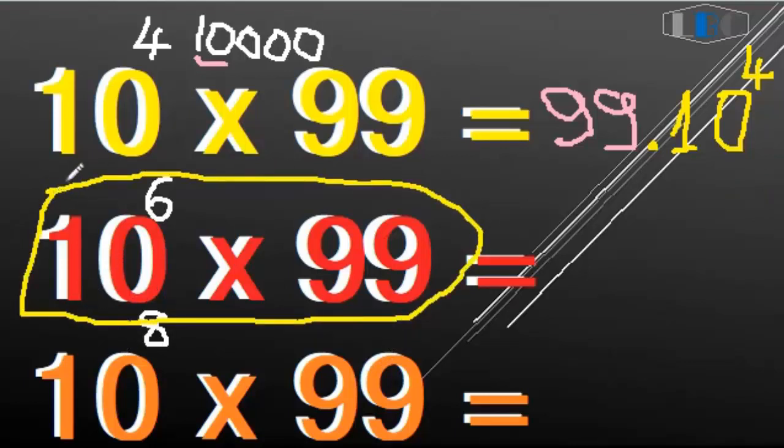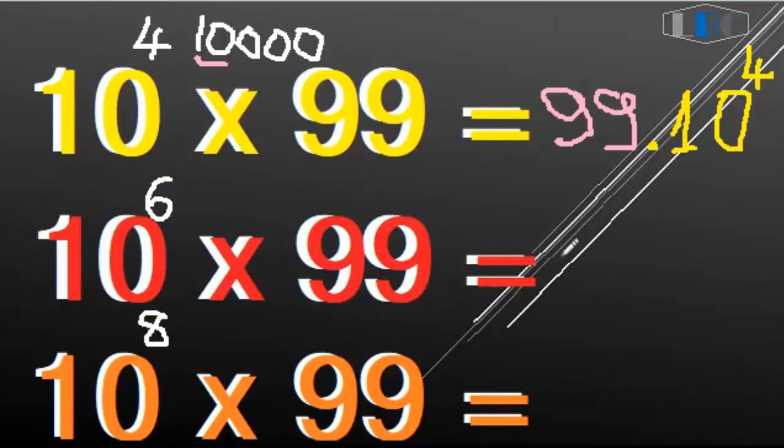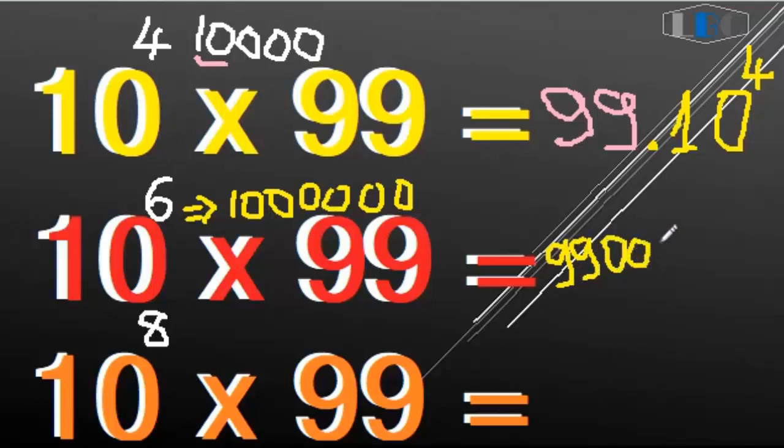So now you can exercise. 10 to the 6th - you can write it, or it means 10 with 6 zeros: 1, 2, 3, 4, 5, 6 and one more. Then count. So you can write 99, then zeros: 01, 02, 03, 04, 05, 06. This is the right answer.